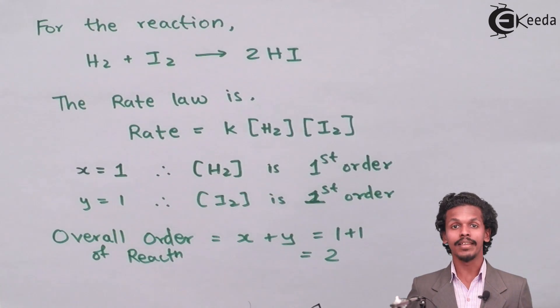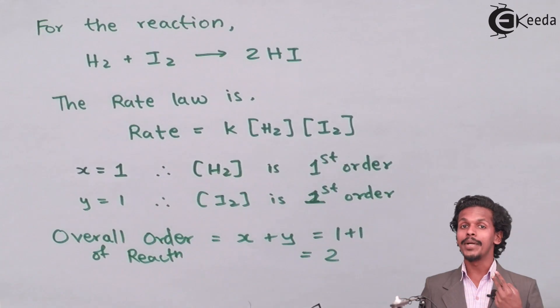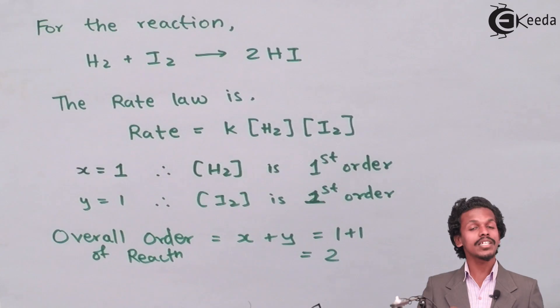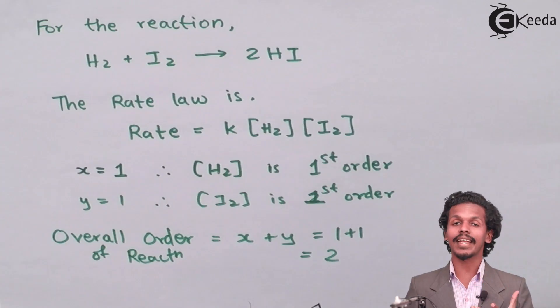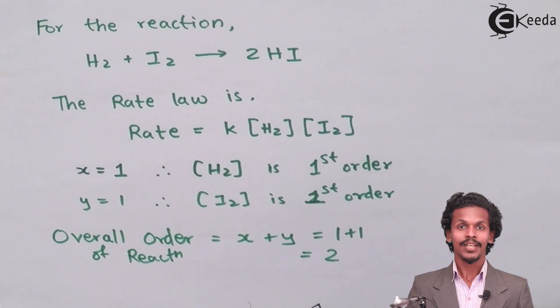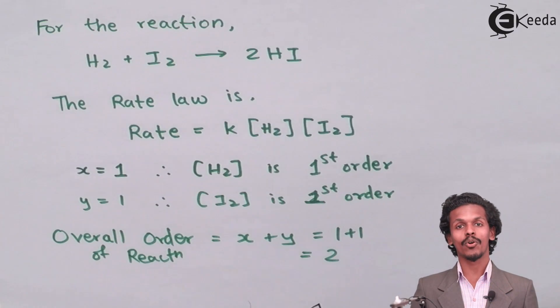So therefore, the order of reaction can be 1, can be 2, 3, or can be 0 also, means the reaction would not depend on the reactant. It will go on simultaneously. It will go in a very spontaneous process. So this was the order of reaction and we could determine the order of reaction also.